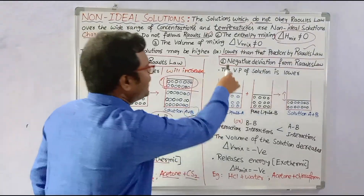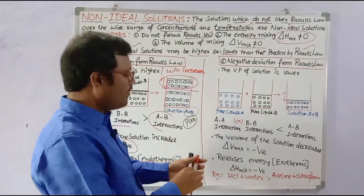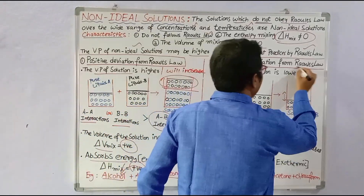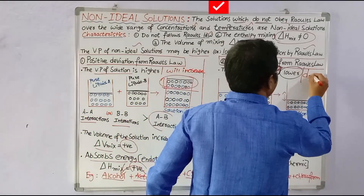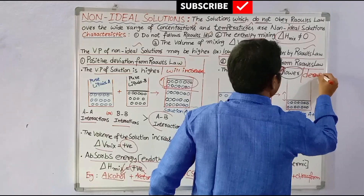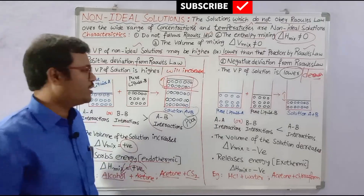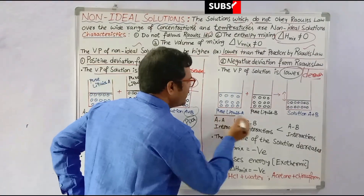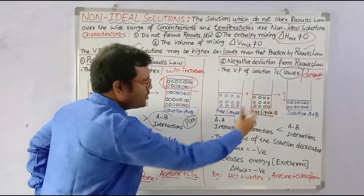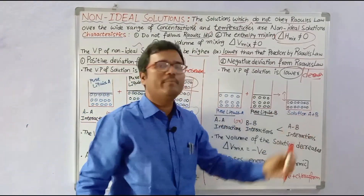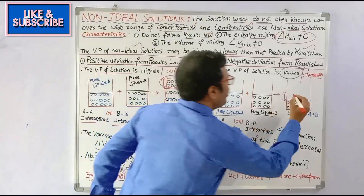In negative deviation from Raoult's law, the vapor pressure of the solution becomes lower — the vapor pressure decreases. When pure liquid A and B mix together, the volume of the solution is decreased.